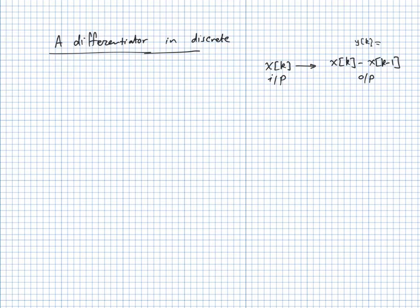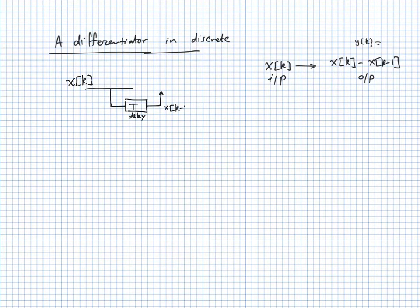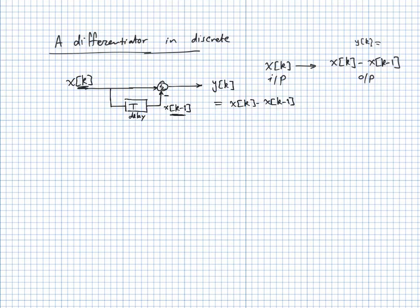The block diagram for the discrete differentiator is: input x(k) branches into two paths. One path goes directly to a summation block. The other path goes through a delay to produce x(k−1), which is then subtracted from x(k) at the summation. This is a feedforward system — not a feedback system. You branch the input, take a delayed version, and subtract it from the original input.